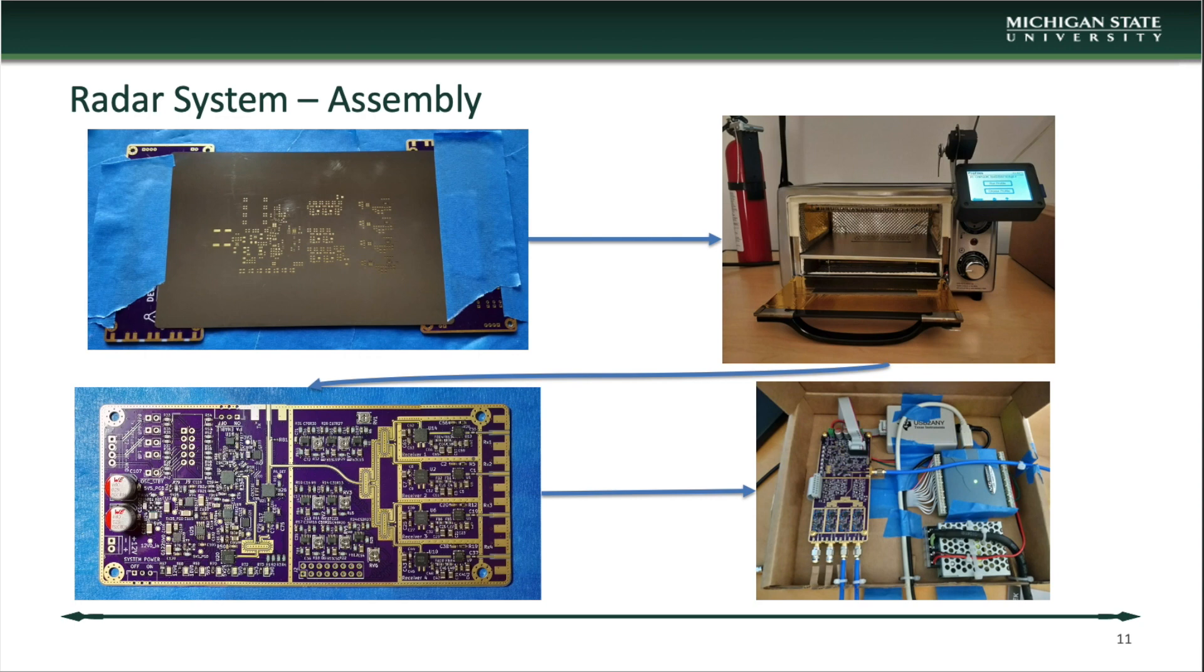Once the fabricated PCBs were received, the assembly took place in a DIY home lab. Due to the decision to use industry standard QFN packaging, a reflow process was required to assemble the board. A Controlio V3 reflow oven controller was fitted to a modified toaster oven. While some experimentation was needed to achieve the ideal parameters, the assembly process was able to be completed relatively easily on the first attempt with minimal need for rework. Finally, the completed board was packaged in a box with the TI USB to any programmer and the DAC and power supply. A three-cell lipo was later added for portability.